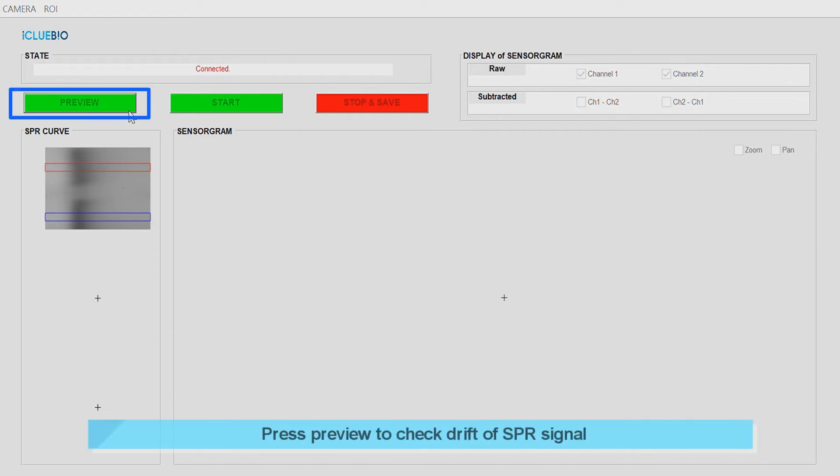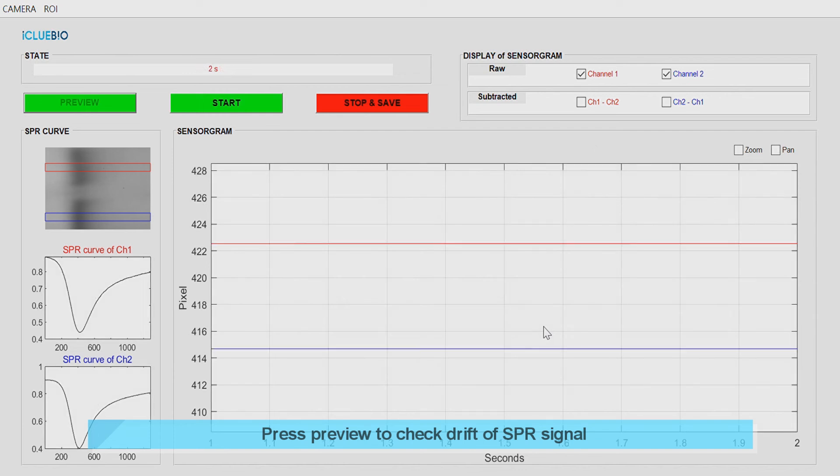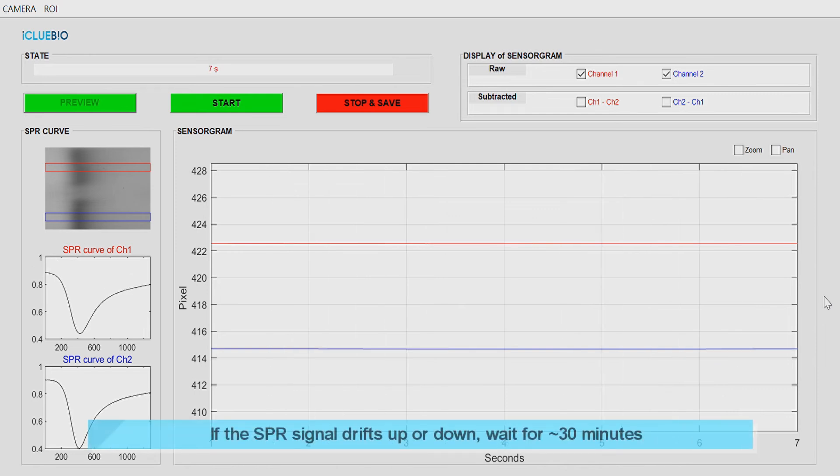To set an equilibrium point of the instrument, press the preview button. If the SPR signal drifts up or down, wait for about 30 minutes until acquiring a stable signal.